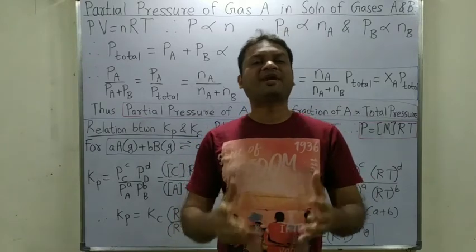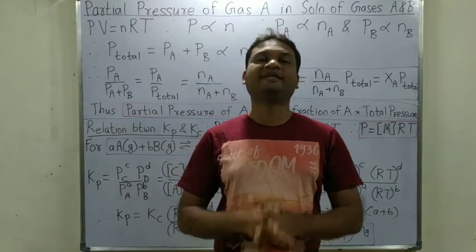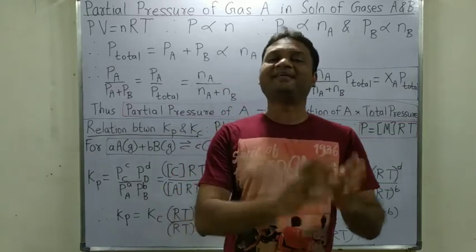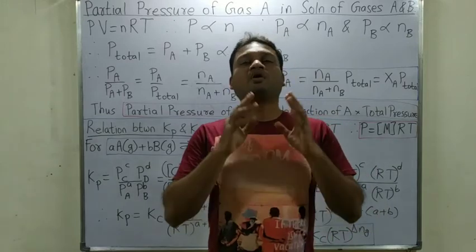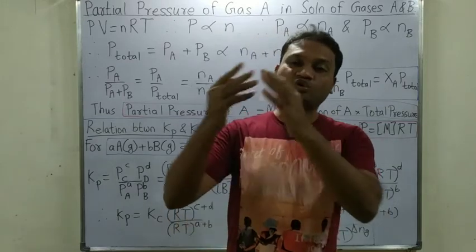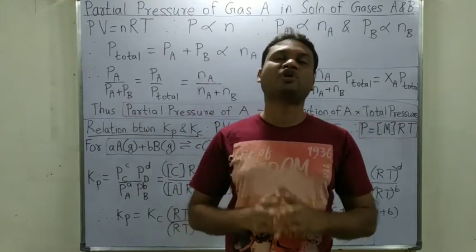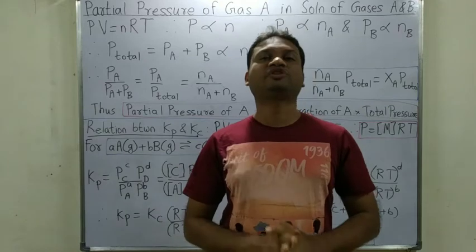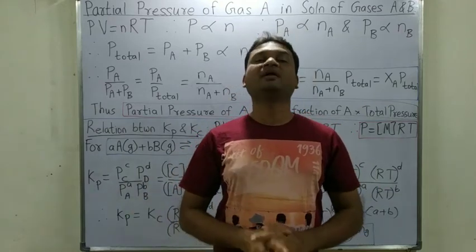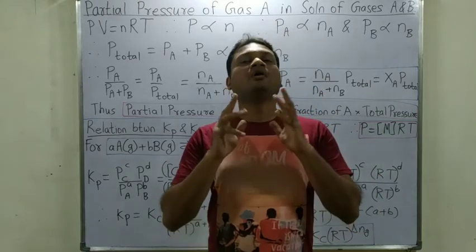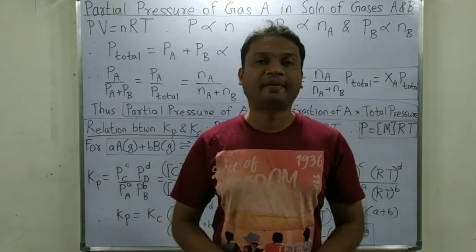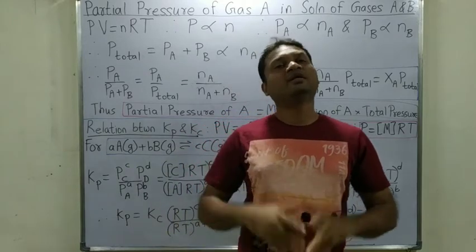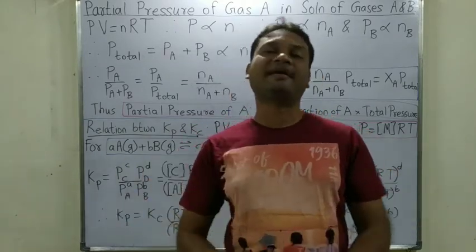In the previous section we studied two types of equilibrium constants. The first was the equilibrium constant in terms of concentration, Kc, defined as concentration of products raised to their stoichiometric coefficients upon concentration of reactants raised to their stoichiometric coefficients. The second type was the pressure equilibrium constant, Kp, defined as partial pressure of products raised to their stoichiometric coefficient upon partial pressure of reactants raised to their stoichiometric coefficient.